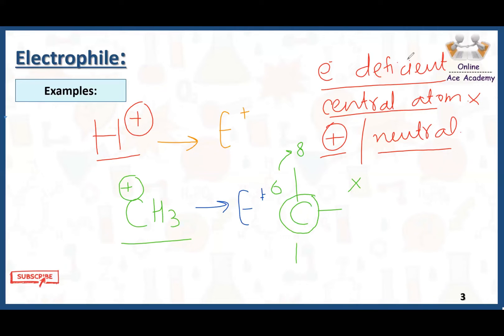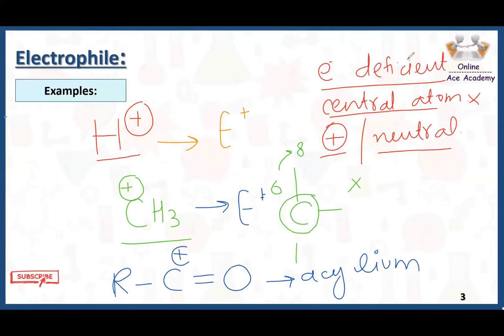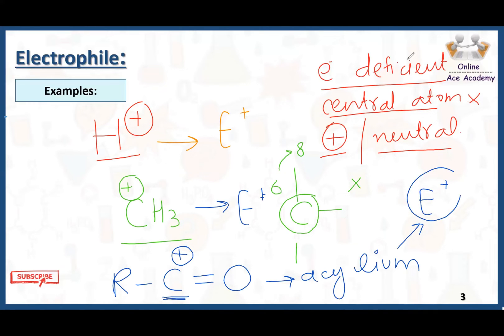Another example is the acylium ion. The acylium ion is RC double bond O+. This ion also has a positive charge on the carbon atom, which is the central atom. Its octet is not complete and it also has a positive charge. That is why this acylium ion is also acting as an electrophile.